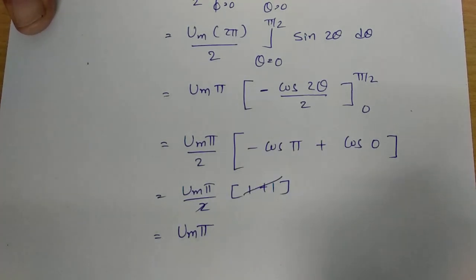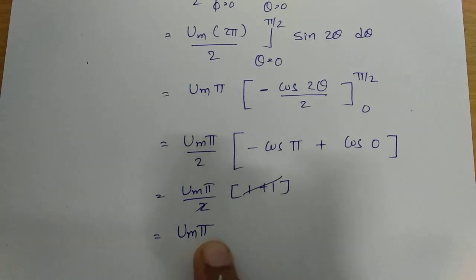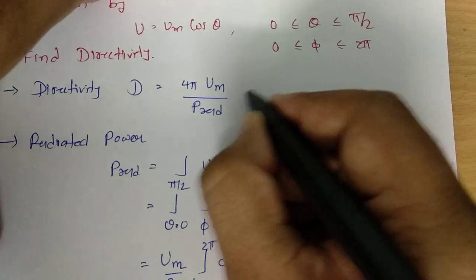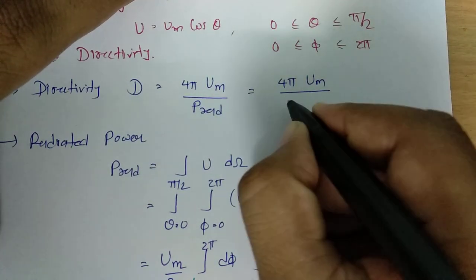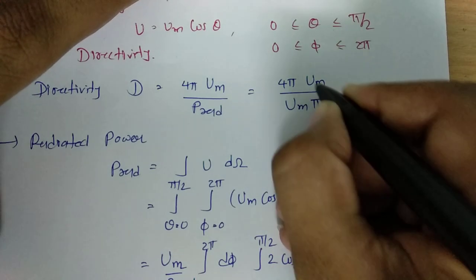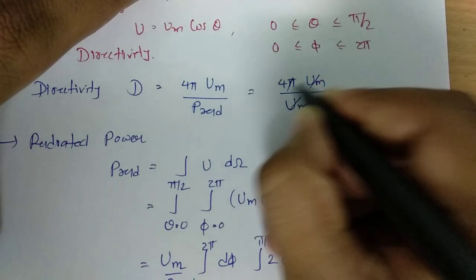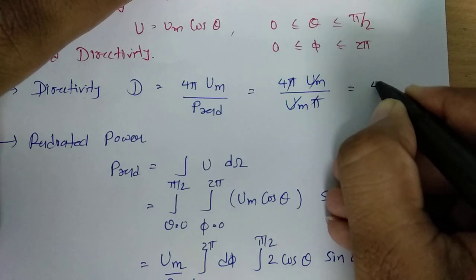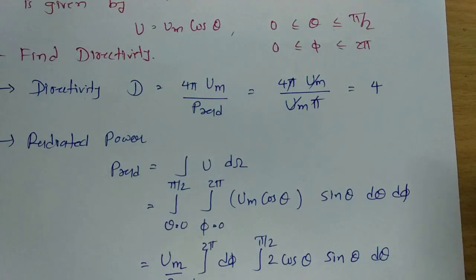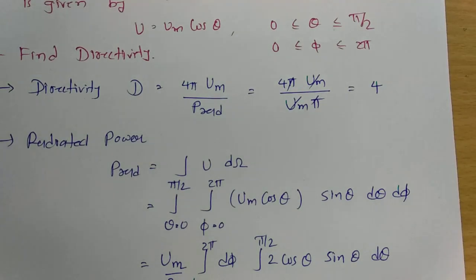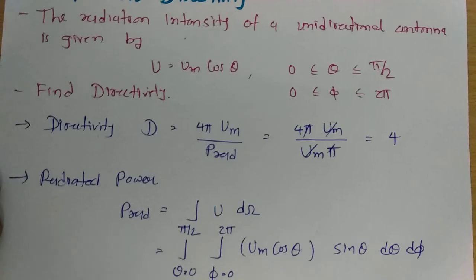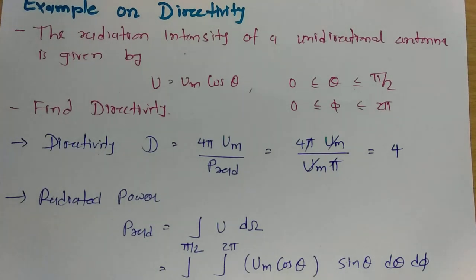Placing into the directivity formula: D = 4π·Um / (Um·π). The Um and π cancel, giving directivity D = 4. So in this case, the directivity is 4.